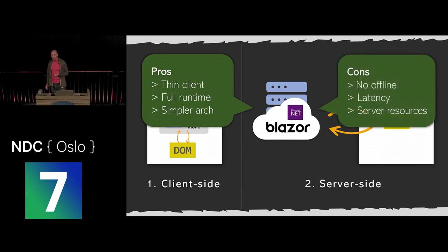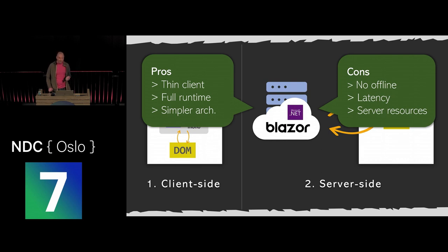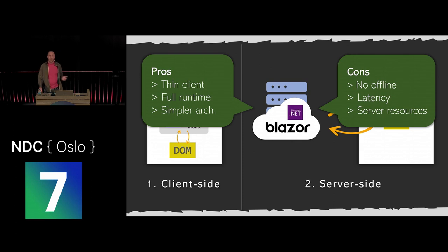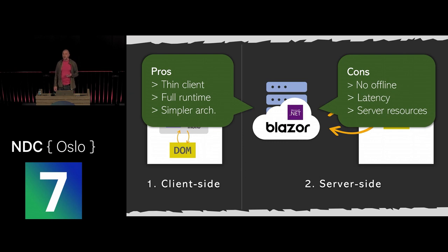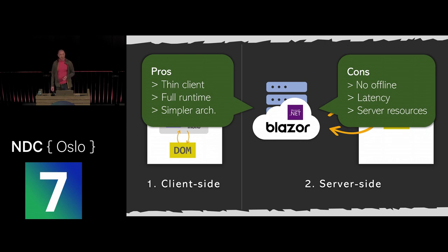However there are real drawbacks. First, no offline support — every interaction happens on the server. Second, latency: the speed of light is genuinely a constraint — if your server is 100ms away in light-speed terms, you have at least a 200ms round trip. Third, cost: your code runs on your server, consuming CPU you pay for, whereas client-side Blazor lets each user bring their own CPU to execute your code.